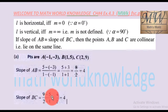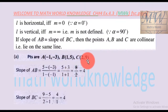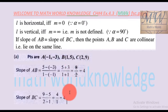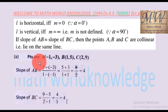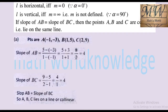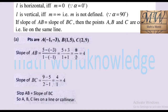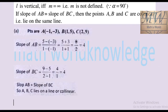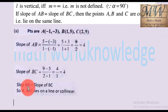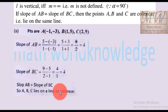Now the slope of BC: B is (x1, y1) and C is (x2, y2). Slope of BC = (9 - 5) / (2 - 1) = 4/1 = 4. It means that slope of AB and slope of BC are equal - they are the same. Therefore these points lie on the same line, so these points are collinear.